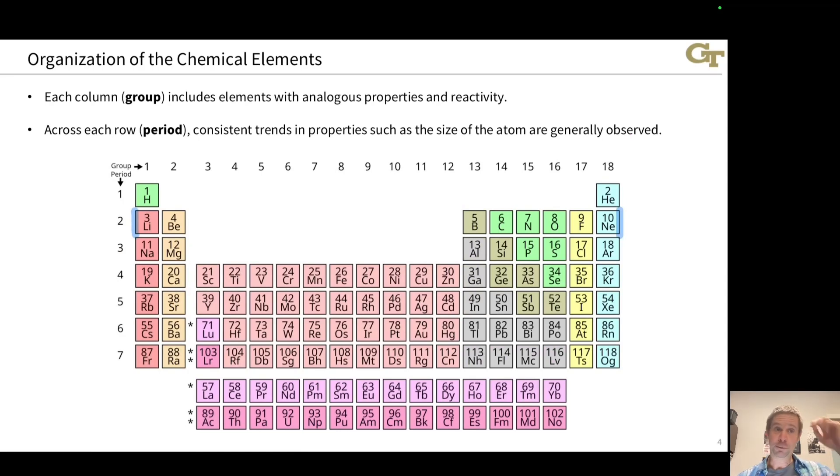The basic organization of the periodic table looks like this and includes columns and rows. Each column is known as a group. Group is the technical term that we use for a column of elements on the periodic table. Each column gets a number, group 1, group 2, group 3, etc. And elements within a group, elements in a common column, have analogous properties and reactivity.